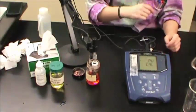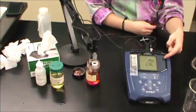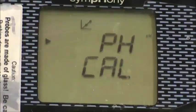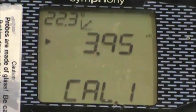Go into calibration mode by pressing CAL on the instrument. The screen should read PH CAL, then automatically change to show the pH reading of your solution and CAL 1.